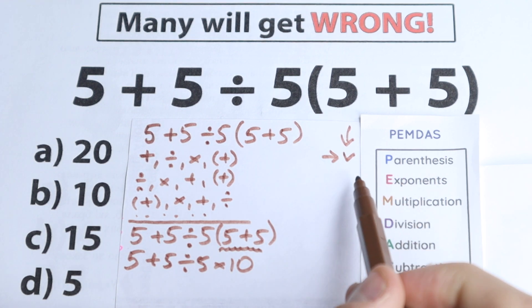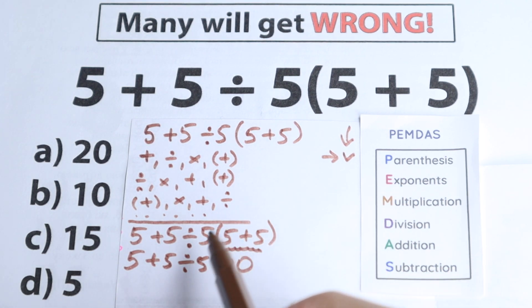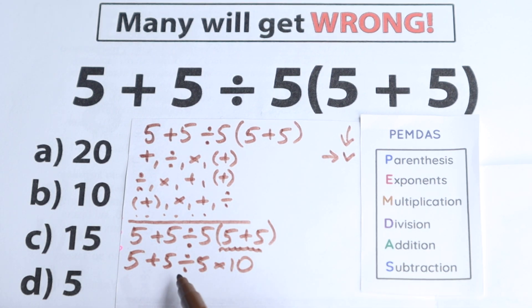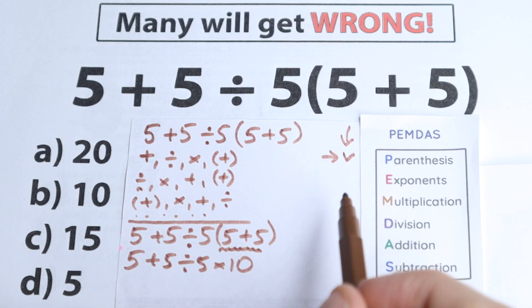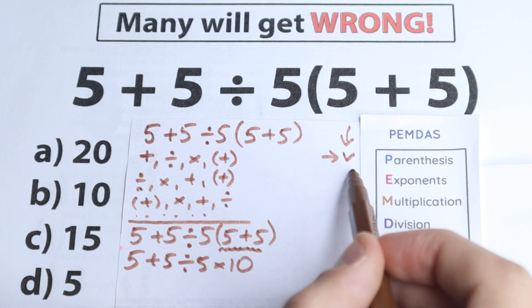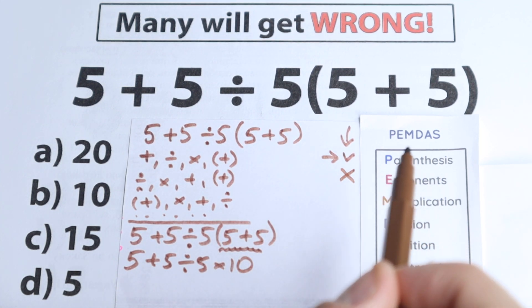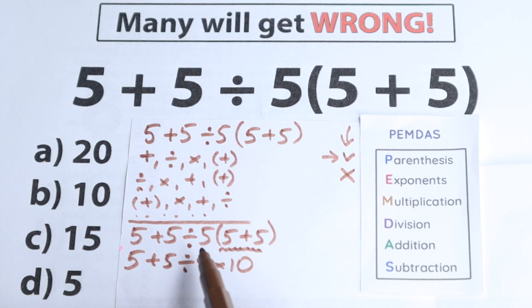Next step: exponents. What about exponents? I don't see any exponents — we don't have any cubes or squares right here, so we can easily skip this part. We don't have any exponents, which is really good for us.